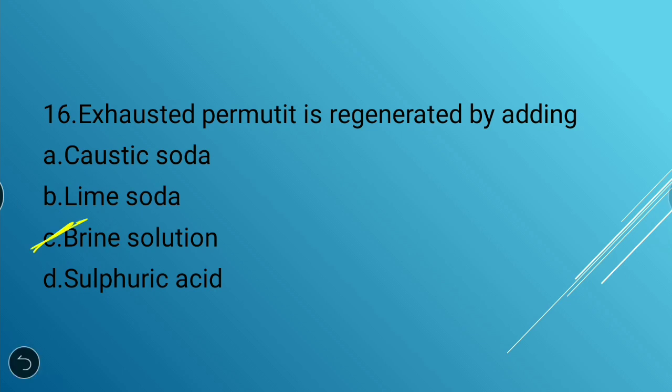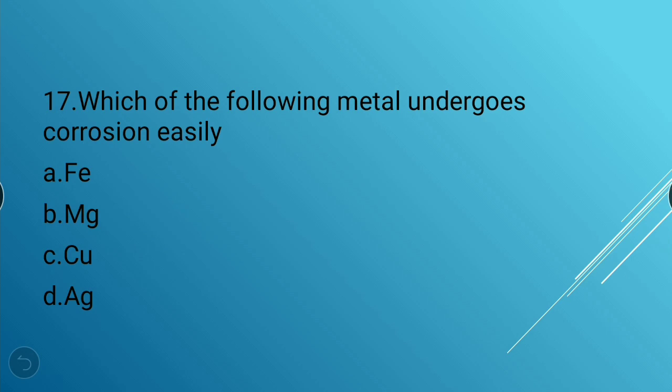Next question: Which of the following metals undergoes corrosion easily? Options: iron (ferrum), magnesium, copper, silver. The answer is magnesium — magnesium undergoes corrosion easily.